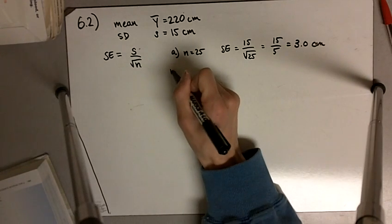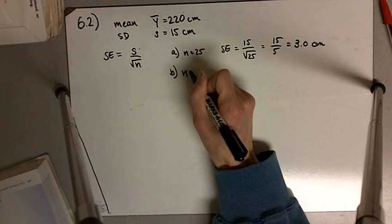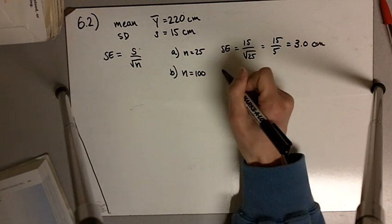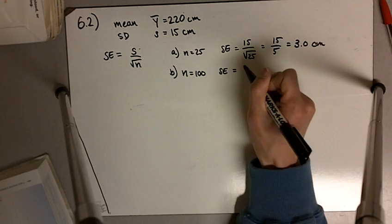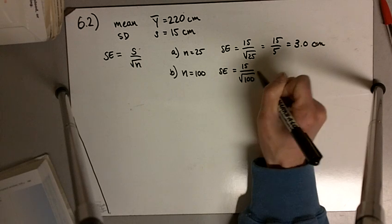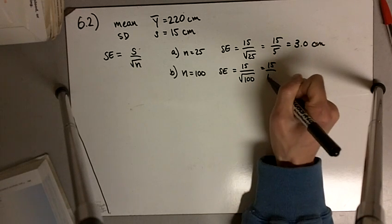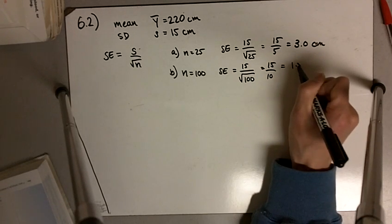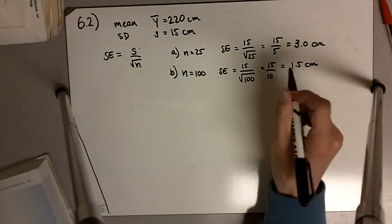In part b, if n is equal to 100, the standard error is going to be 15 centimeters divided by the square root of 100, or 15 divided by 10, or 1.5 centimeters.